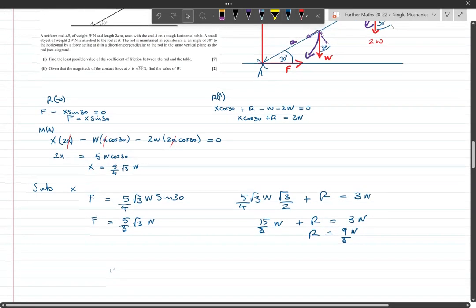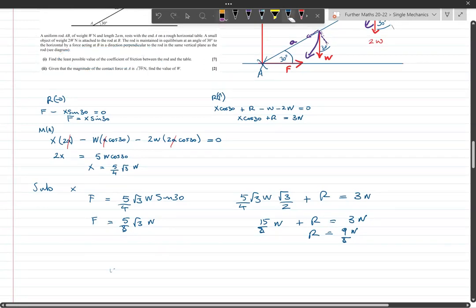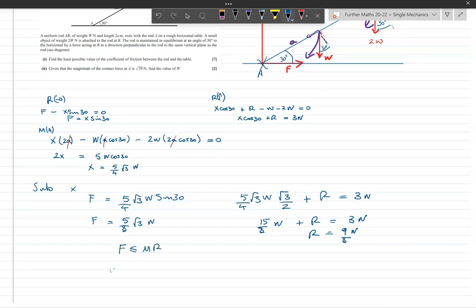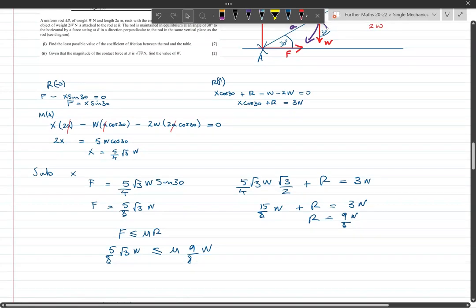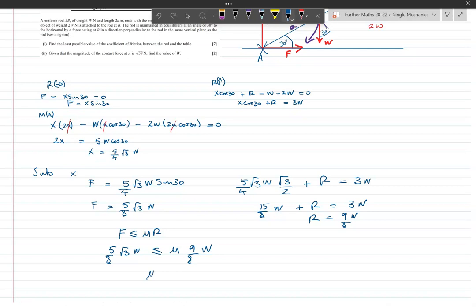In these, whenever we see anything which talks about an inequality and there's a coefficient of friction involved, almost certainly we're just going to be using this inequality: F is less than or equal to μR. So we have 5 over 8 the square root of 3W is less than or equal to μ times 9 over 8W. We can see W cancels, the 8 cancels, and we are left with μ is greater than or equal to 5 the square root of 3 over 9. So that's the least it can be. It has to be more than that, so if it's any less than that this thing's going to slip or topple.